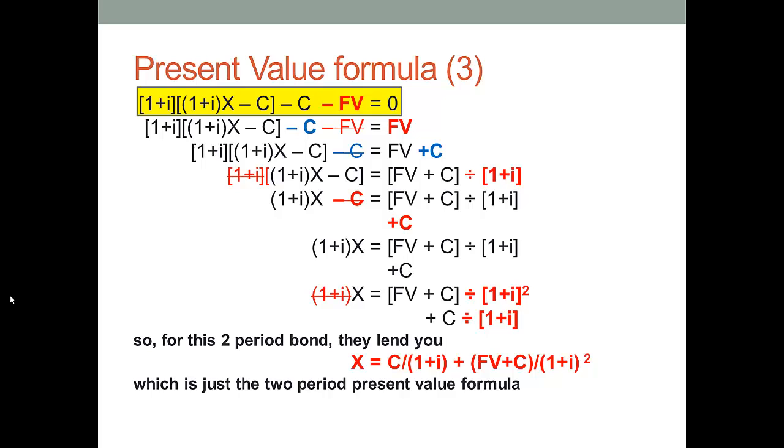So what have we got? I've just rewritten it now without any red stuff. So 1 plus I, X equals fair value plus C divided by 1 plus I plus C. Well, we've still got a 1 plus I on the left-hand side. So let's divide both sides by 1 plus I. So the left-hand side is now X. The right-hand side, the FV plus C was previously divided by 1 plus I. Now it's divided by 1 plus I squared. And the C was previously divided by 1. Now it's divided by 1 plus I. X equals FV plus C divided by 1 plus I squared. Remember, that FV and that C are two periods away. Plus C divided by 1 plus I. That C is one period away. So for this two period bond, how much are they going to pay you? What's X? Well, X is just the first coupon a year away divided by 1 plus I plus the payments in the second year, the FV and the coupon divided by 1 plus I squared. Hey, that's just the two period present value formula. Right?